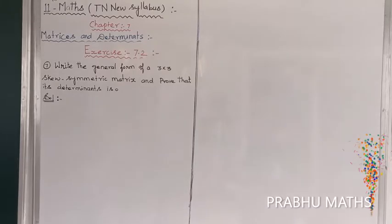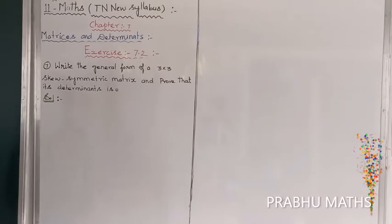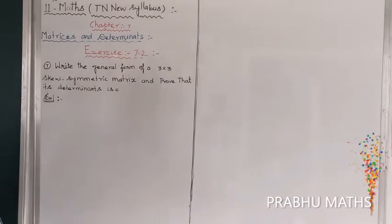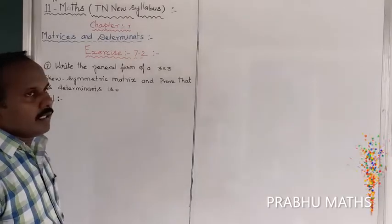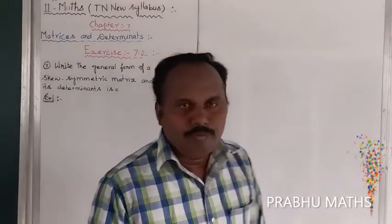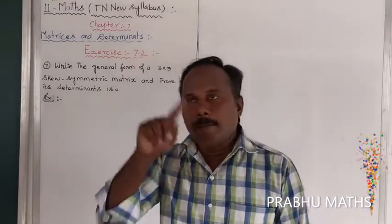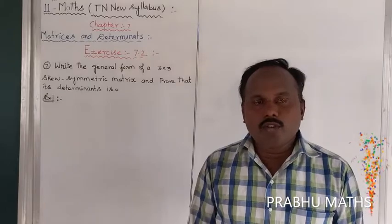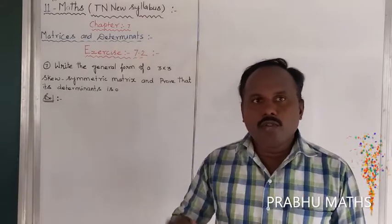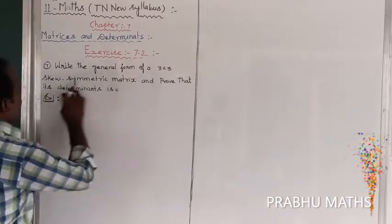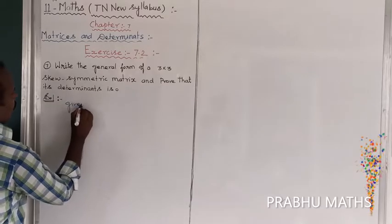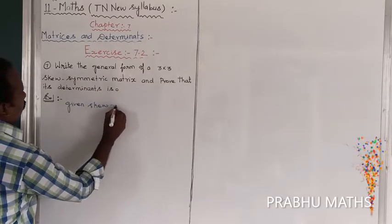Exercise 7.2, 7th sum: write the general form of the 3 by 3 skew symmetric matrix and prove that its determinant is equal to zero. So what is the skew symmetric matrix? The first diagonal is going to be fully zero. The upper diagonal triangle is going to be plus values, and the downward triangle is going to be minus values.